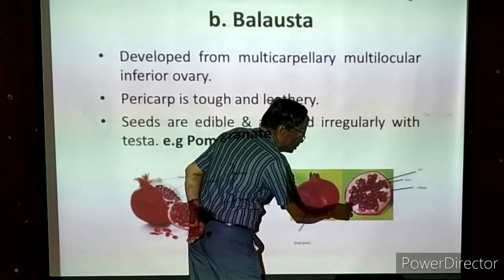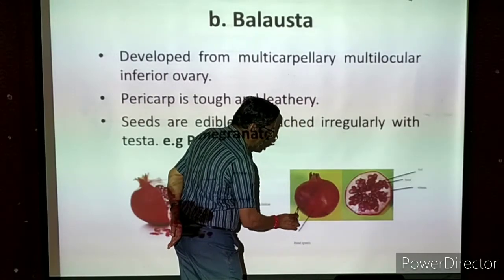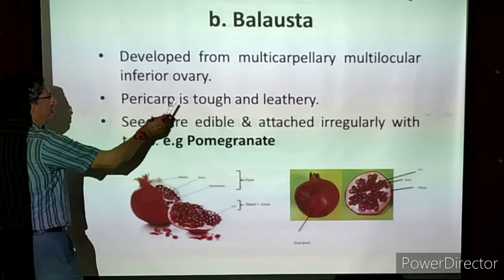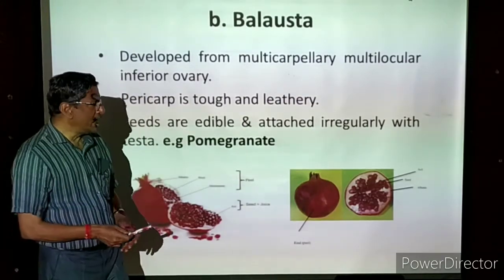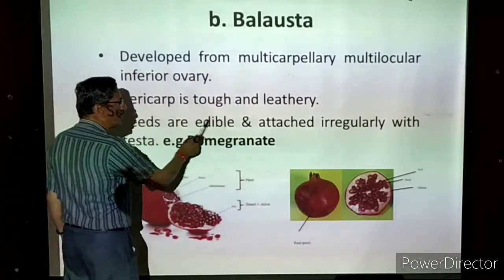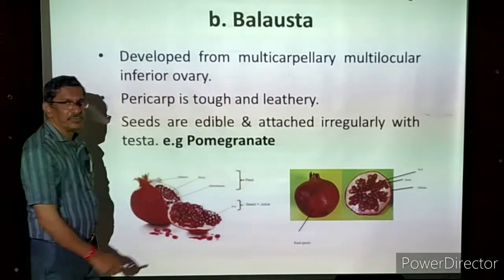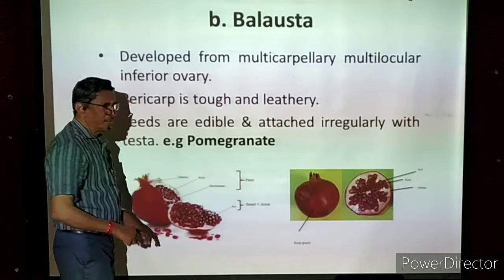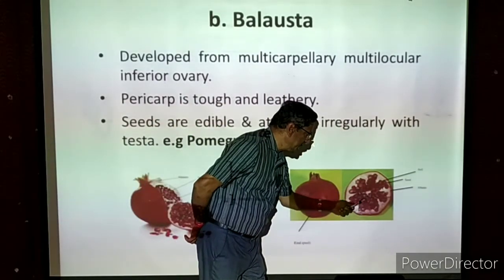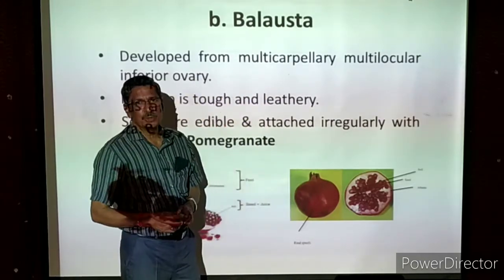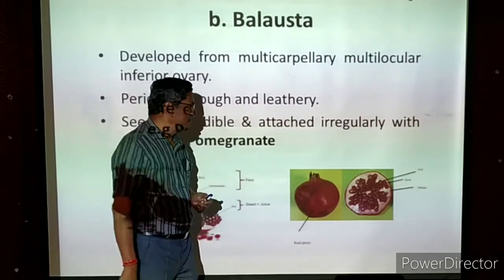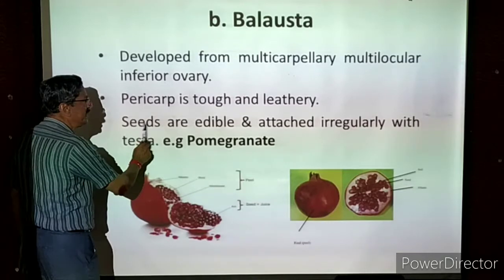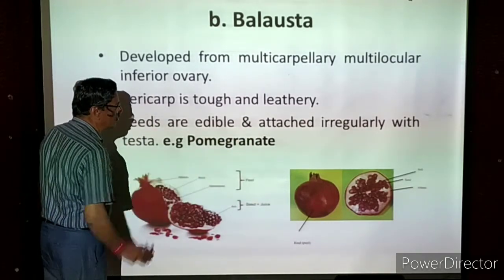In pomegranate, the outer wall is very tough — very leathery and tough. The seeds are edible; only the seeds are edible. The outer epicarp is not edible — we remove and throw it away. The seeds are irregularly attached — not arranged regularly, but randomly attached with the walls. If you cut the fruit, you can observe that the outer red wall is there, with white colored small septa inside called testa. The seeds are attached with the testa. Example: pomegranate.